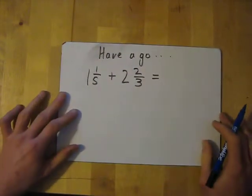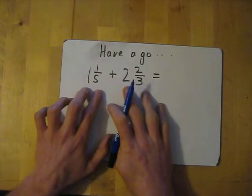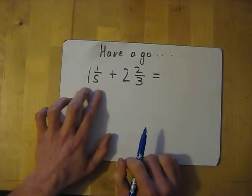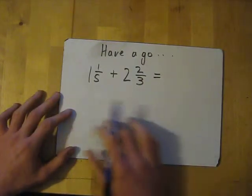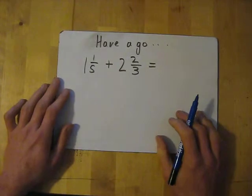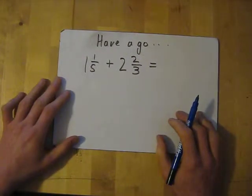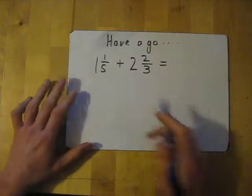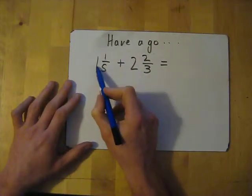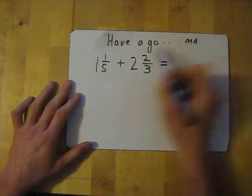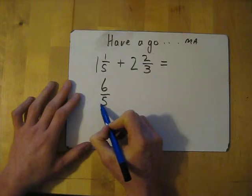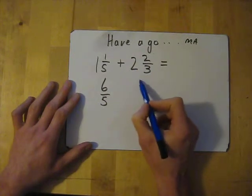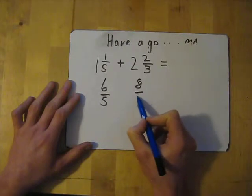Let's try one for you to have a go at yourself. Remember: convert into improper fractions using MA, find the common denominator, convert them, keep the bottom the same and add the top. Pause now if you want to try it. Convert to improper fractions: 1 times 5 is 5, add the 1 gives me 6, so 6 over 5. Then 2 times 3 is 6, add the 2 gives me 8, so 8 over 3.